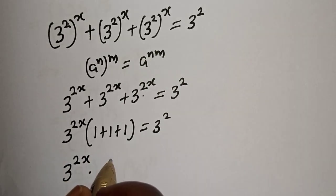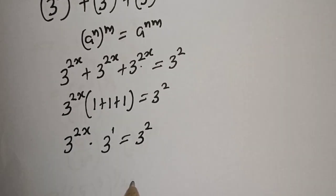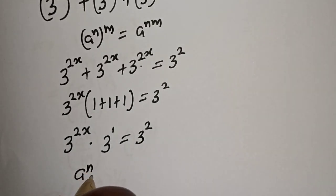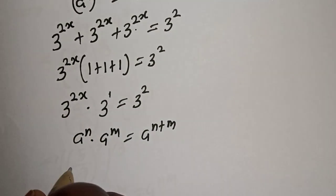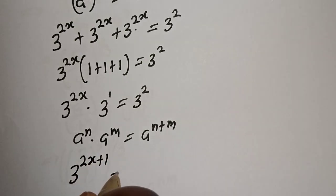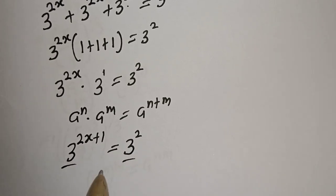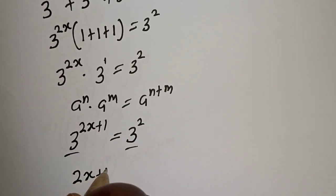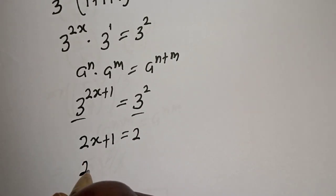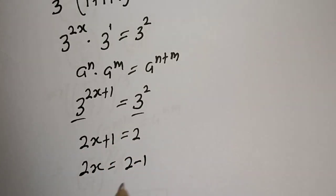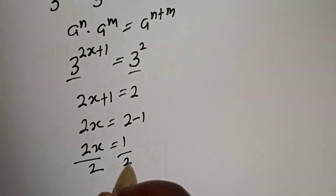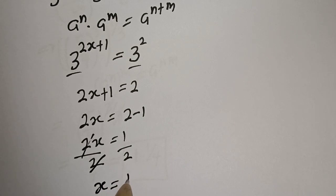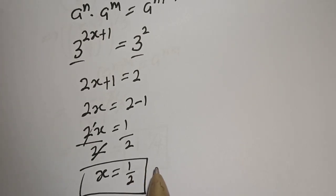Multiplying 3 raised to power 2s by 3 raised to power 1 — using the rule a raised to power n multiplied by a raised to power m equals a raised to power n plus m — the left-hand side becomes 3 raised to power 2s plus 1 is equal to 3 squared. They have the same base 3, so the exponents must be equal: 2s plus 1 equals 2, giving 2s equals 1. Dividing both sides by 2, s equals 1 over 2. This is the final answer.